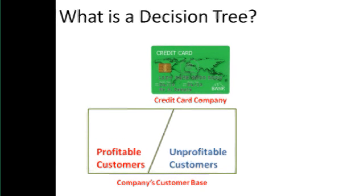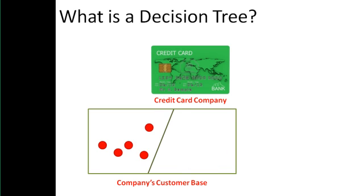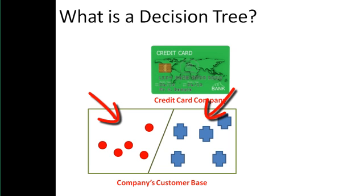On our slide, we will denote profitable customers with red dots and unprofitable customers with blue crosses. In our simplified example, let us assume the company has 5 profitable and 5 unprofitable customers. This box here represents the company's customer base. It has 5 red dots, i.e., 5 profitable customers, and 5 blue crosses, i.e., 5 unprofitable customers.